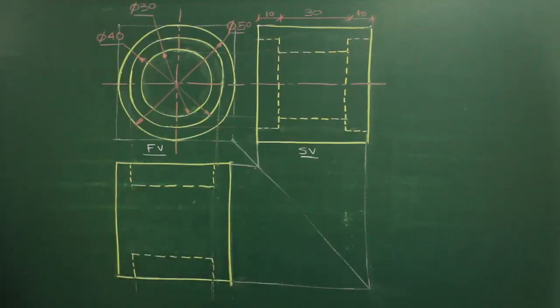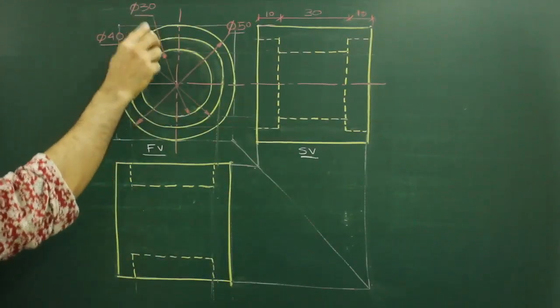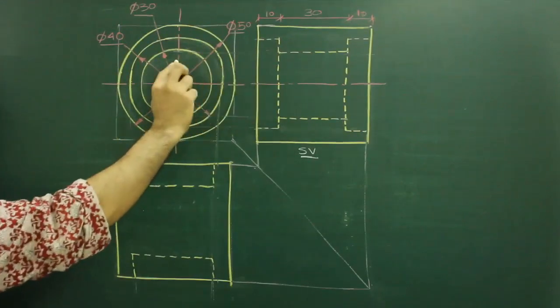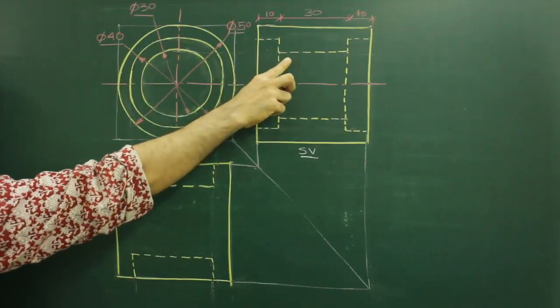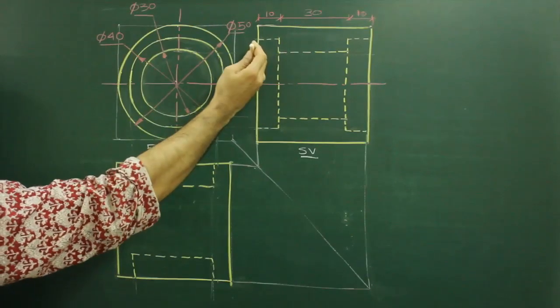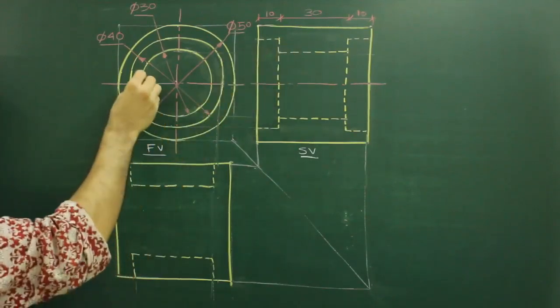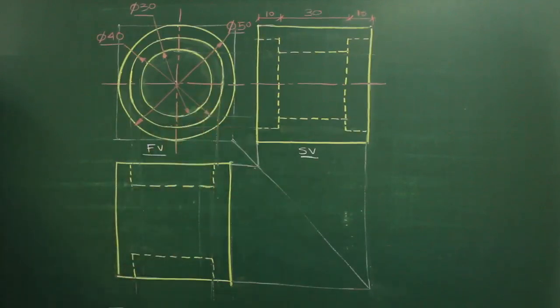Now after that, if you see inner circle of diameter 30, it is starting from here. See this, it is not starting from here. It is starting after 10 deep. After this, then it is starting. So what we need to do, we also need to do the same thing. It will start from here.